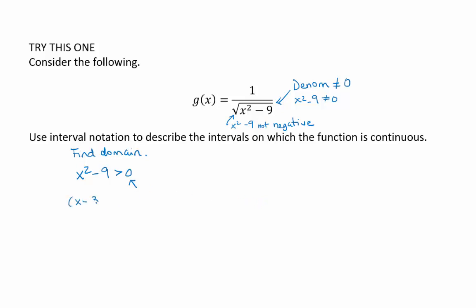If we just factor that's x minus 3, x plus 3, we want to know where is that greater than 0. How do you determine where it's greater than 0 then? Finding where it equals 0 is a step you can use to do what? Then what do you do after that? Plug in values in between. Very good.